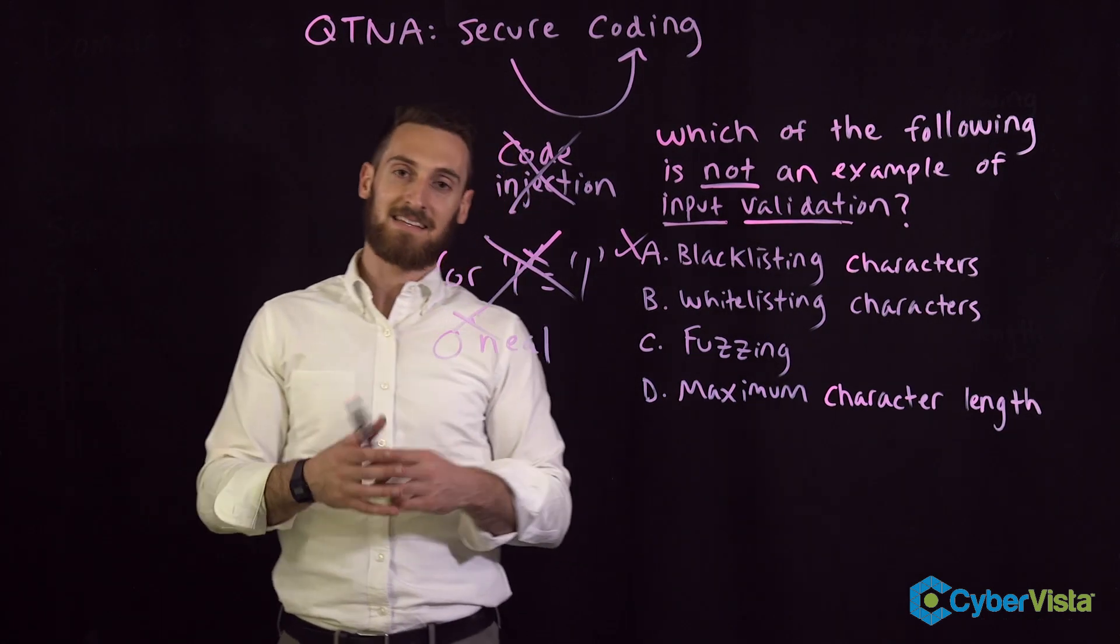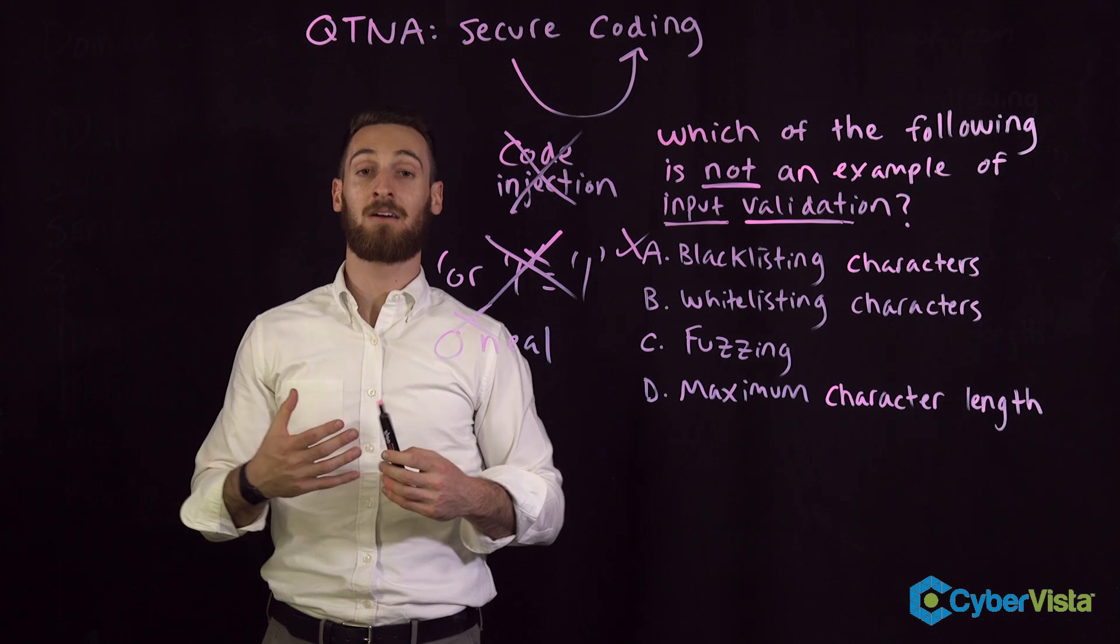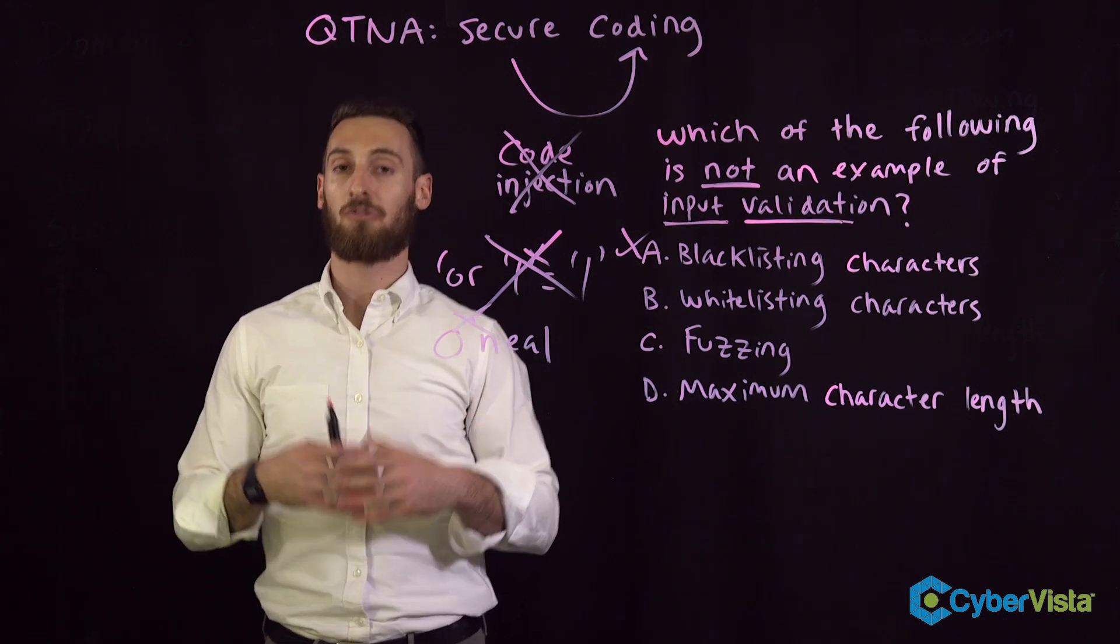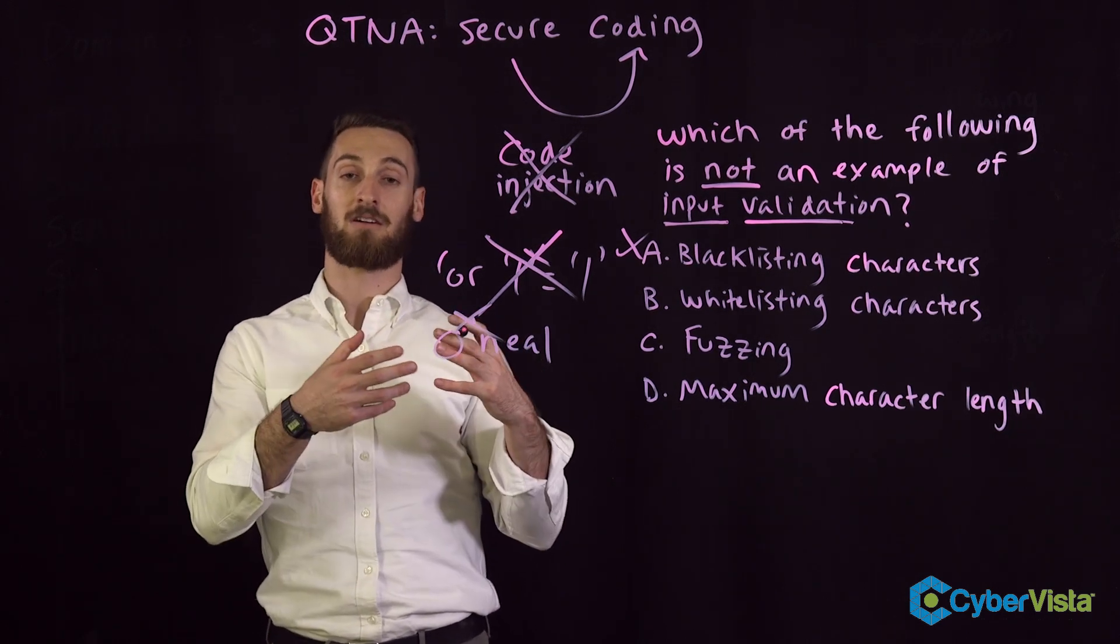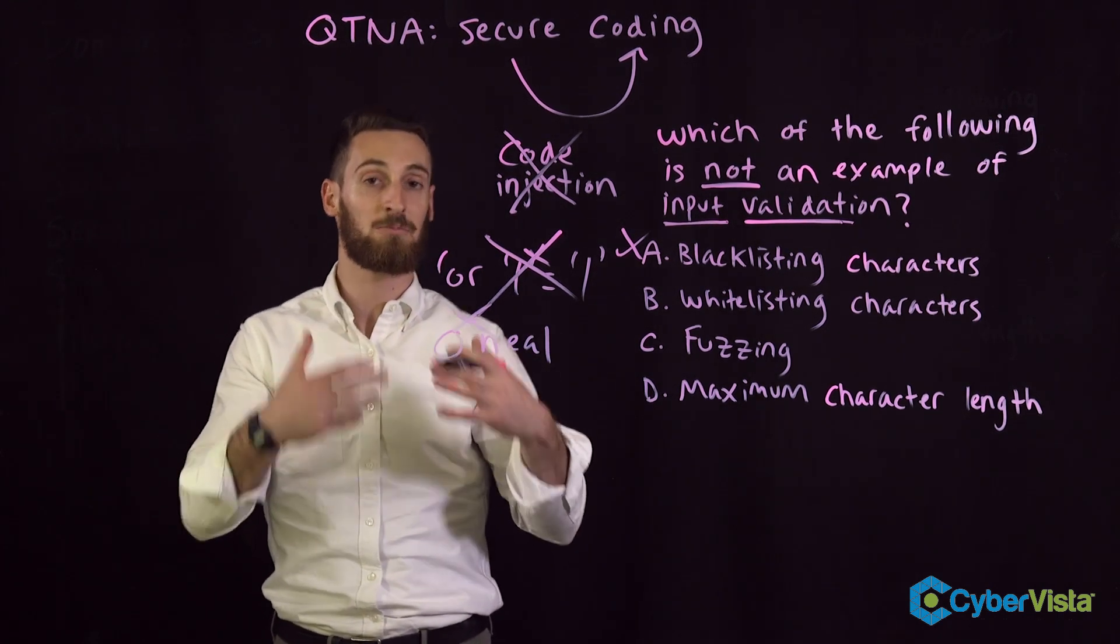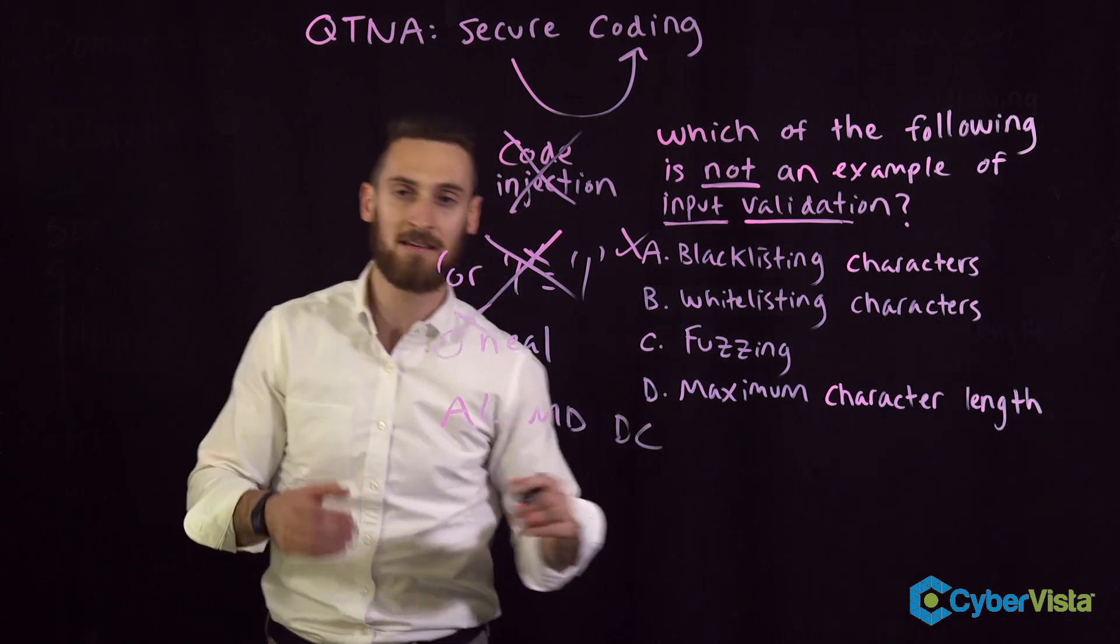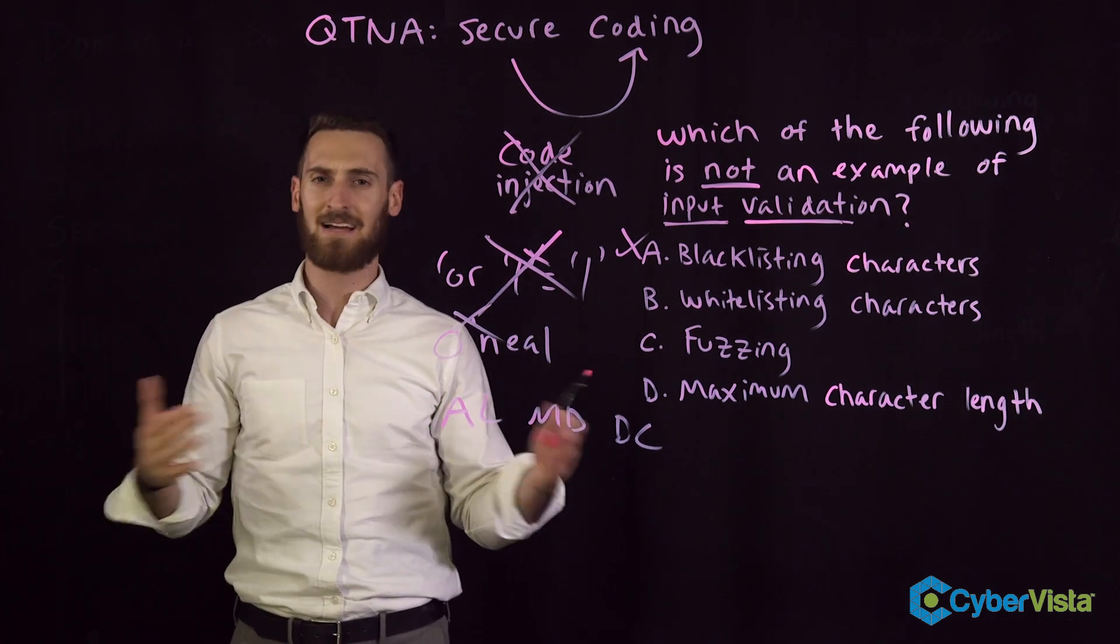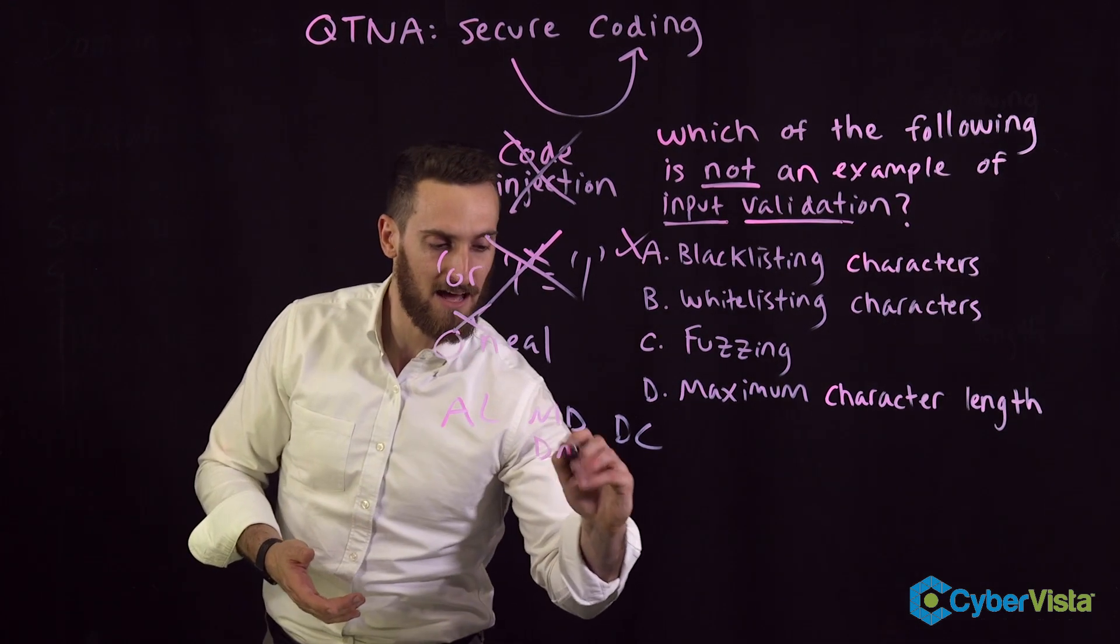Let's do the next one: whitelisting. If blacklisting is saying we're not allowing very specific characters, whitelisting is allowing very specific characters only. If somebody is typing in a form to fill out their shipping address and they have a space to input their state mailing address, we're going to expect 50 some odd state abbreviations. Anywhere from Alabama to Maryland to D.C., we're expecting just those abbreviations that we know are true and good.